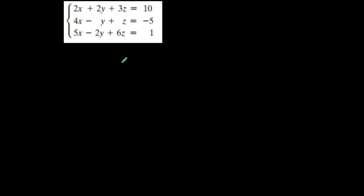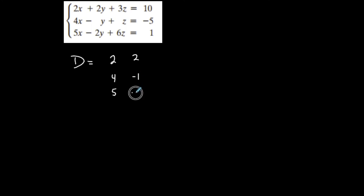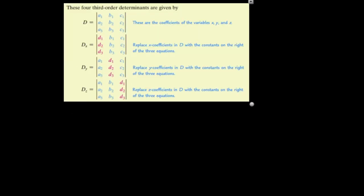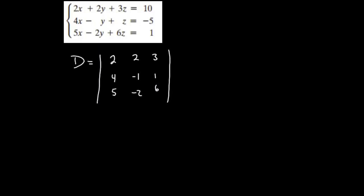This system is already in the form I need — x column, y column, z column equal to constant. So capital D is the determinant of the 3 by 3 coefficient matrix. Going down my x's, going down my y's: 2, negative 1, negative 2. Going down my z's: 3, 1, 6. This is my capital D — the determinant of the coefficient matrix.